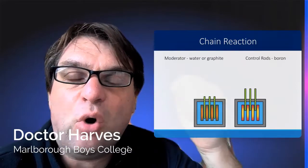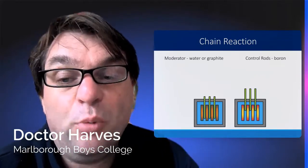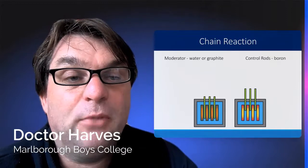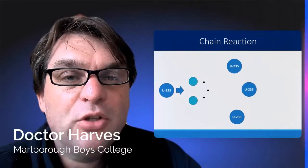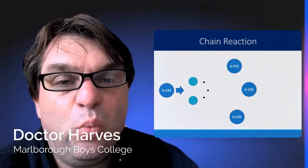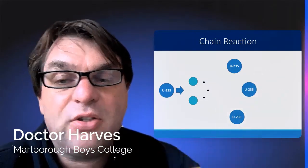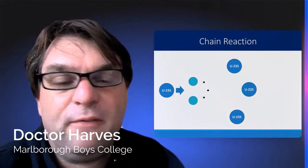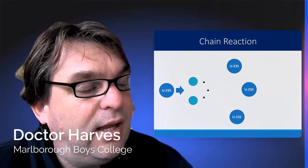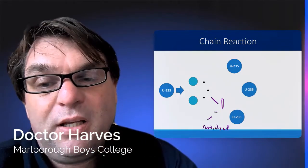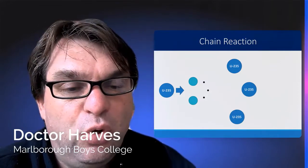We also have control rods, usually made of boron — hence more expensive, and hence why the Russians didn't use them at Chernobyl. Boron absorbs the neutrons and actually shuts down the chain reaction entirely. The moderator rods slow the reaction down; the control rods, made of boron, completely stop the process because they absorb the neutrons so they can't interact with any adjacent Uranium-235 isotopes.